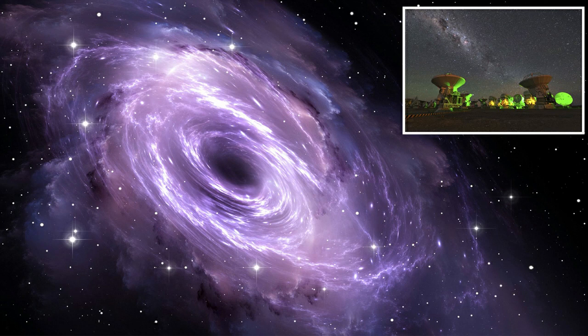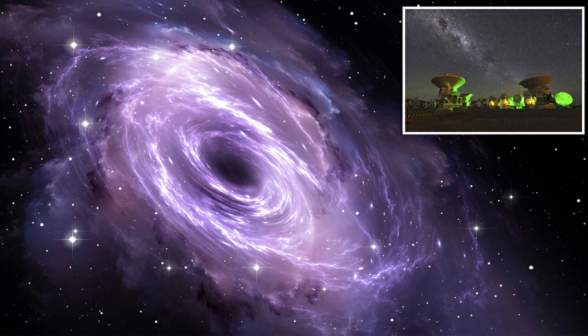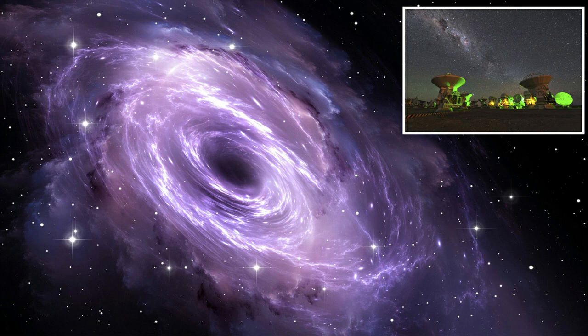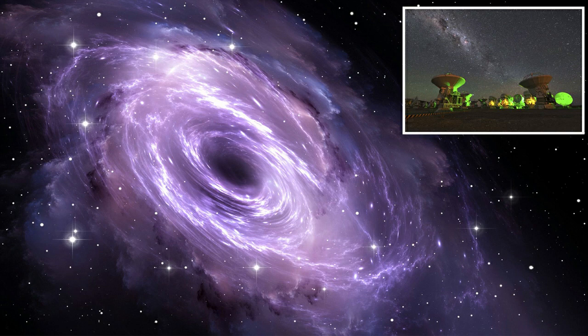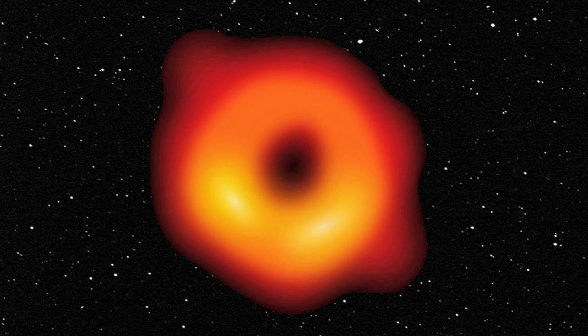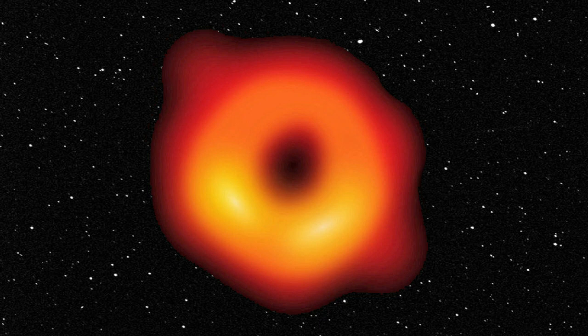The direct sighting of LB1 proves that this population of overmassive stellar black holes exists even in our own backyard. This discovery forces us to re-examine our models of how stellar mass black holes form, said LIGO director Professor David Reitze from the University of Florida. This remarkable result, along with the LIGO-Virgo detections of binary black hole collisions during the past four years, really points towards a renaissance in our understanding of black hole astrophysics.